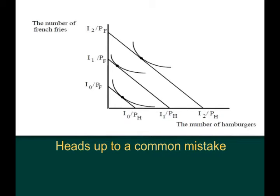Most people assume that once a good is normal, it is always a normal good, and once a good is inferior, it's always an inferior good. That is not true—it's a common mistake. We can see that as we increase income to the second budget constraint, this parallel shift out, the number of hamburgers we actually consume drops. Then another parallel shift out from the second to the third budget constraint shows the number of hamburgers has gone up.